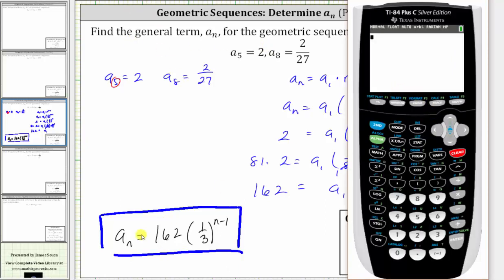When n is 5, a_5 is equal to 162 times 1/3 raised to the power of 5 minus 1, which gives us an exponent of 4, enter, which does give us 2.